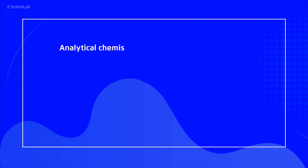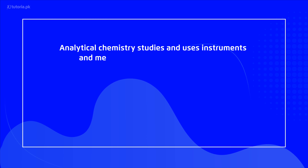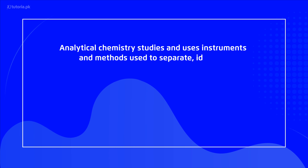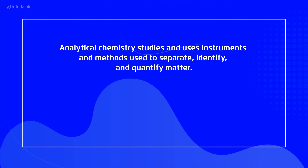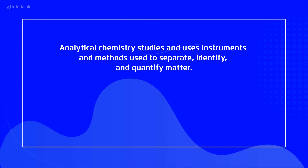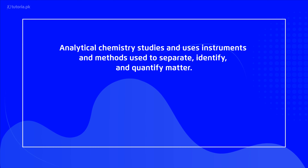جب تک students ہم practically chemical analysis کے through یہ نہیں دیکھیں گے کہ آپ کے پاس کونسا compound present ہے، آپ کتنی quantities کے ساتھ deal کر رہے ہیں، اور جب تک آپ کو یہ نہیں پتا چلے گا کہ آپ کے پاس کونسا reactant کتنی amount میں present ہے یا کتنا product بنا رہا ہے — تب تک آپ مختلف chemical reactions یا chemical processes کے conclusions نہیں نکال سکتے۔ یعنی chemistry کے اندر analysis بہت ضروری ہے۔